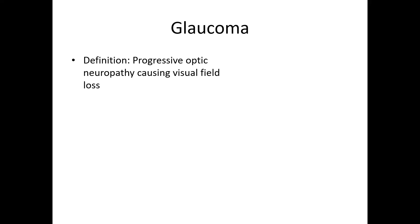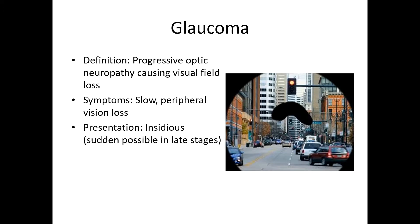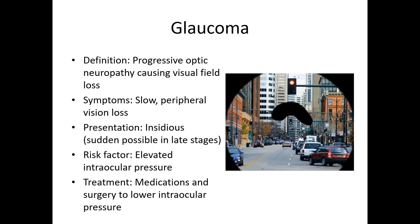Glaucoma is a progressive optic neuropathy causing visual field loss. Its symptoms are slow, peripheral vision loss. A person with glaucoma may be driving down the street and have a certain portion of their vision that is missing, denoted by the arcuate-type defect outlined by the arrow shown in the image. This visual field loss generally progresses from outside inward until central vision is also encompassed late in glaucoma. The presentation is generally insidious, though sudden onset of vision loss can be appreciated by patients in the late stages, especially when this loss creeps to the center of vision. The primary risk factor is elevated intraocular pressure, though all forms of glaucoma do not need this to be present. Treatment is typically via medications and surgery to lower the intraocular pressure.